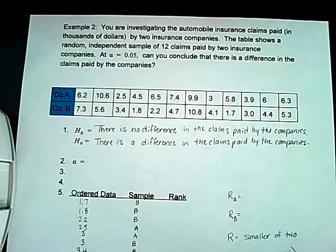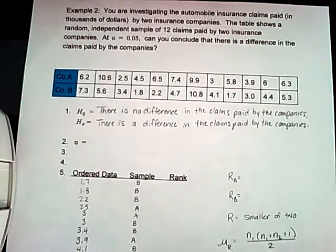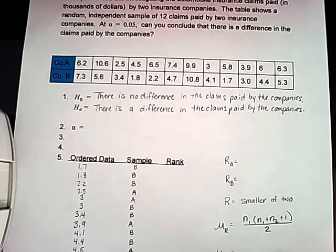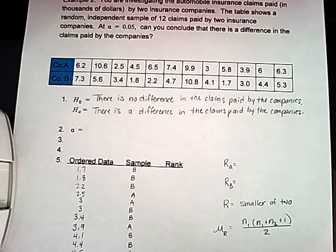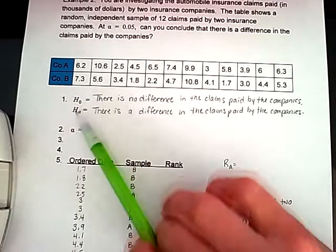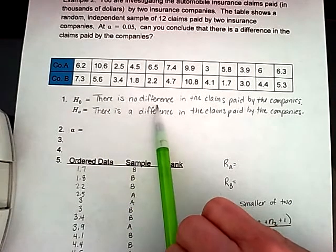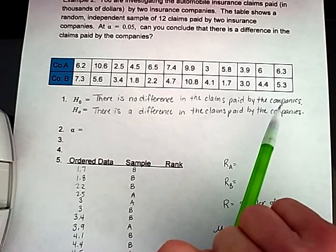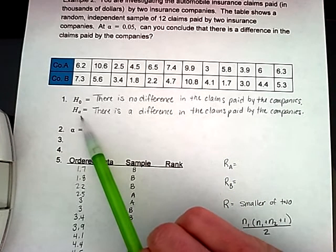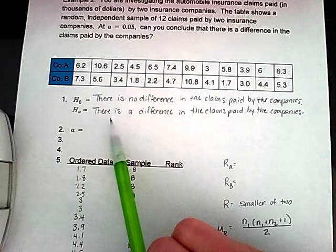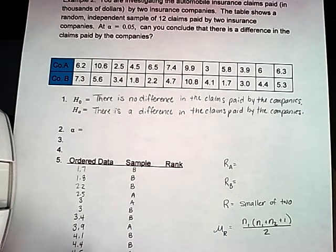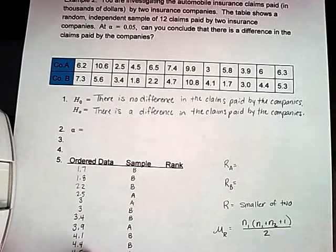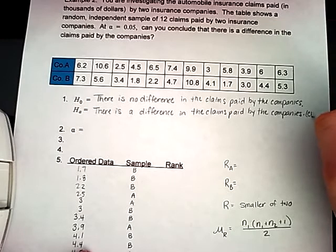I went ahead and did a little bit of setting up to make this go quicker. Step one, our null hypothesis is there is no difference in the claims paid by the companies. The alternative hypothesis states that there is a difference in the claims paid by the companies. This is where our claim is going to go.